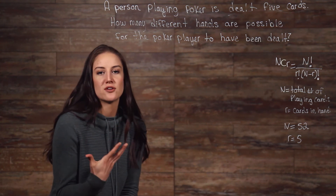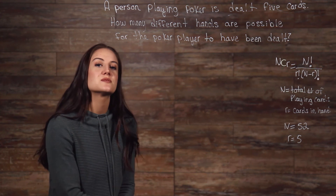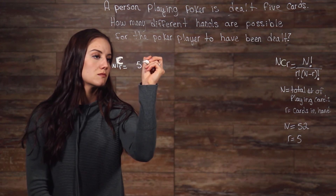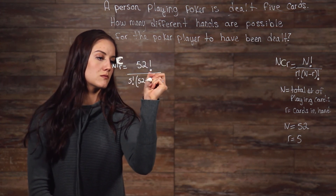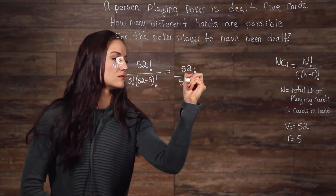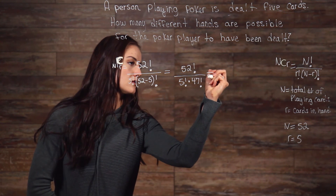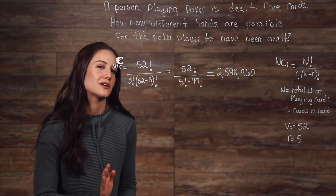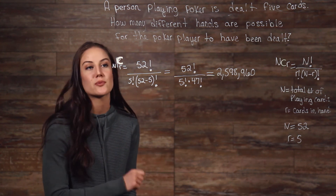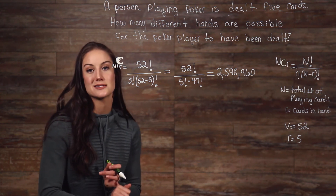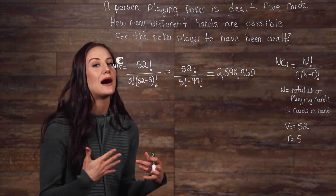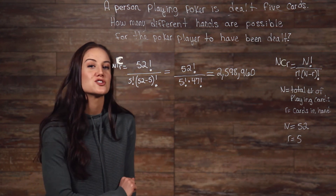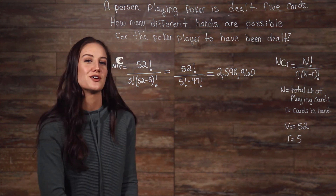Hopefully that helps you to better understand the fundamental difference between permutation and combination. Now let's plug in our numbers to our combination formula and solve. I didn't write out my 52 factorial all the way, but my main purpose is to teach you the difference between permutation and combination and to show you how to apply your numbers into the formula. I hope that this video has been helpful to you. For further help, be sure to check out more of our videos by subscribing to our channel below. See you guys next time!